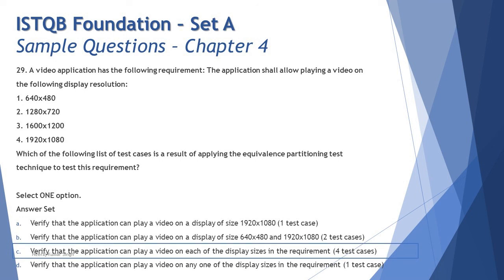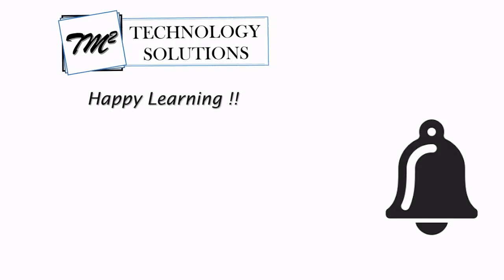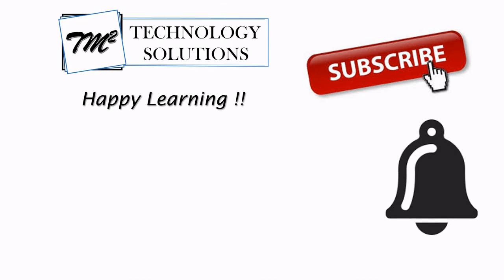The right answer is C: verify that the application can play a video on each of the display sizes in the requirement — that is four test cases. Other options with one or two test cases would not meet the required coverage. This illustrates how to apply equivalence partitioning when there are no numeric ranges. That's all for this tutorial — feel free to comment below with any queries. Keep learning, keep exploring, and happy learning!